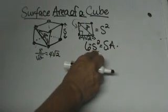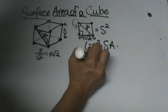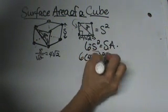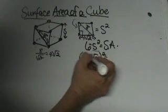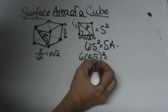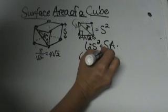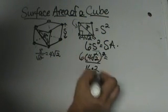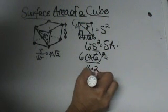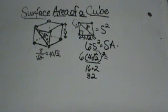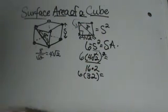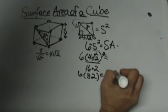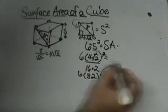Now we can take that and plug it into our formula. So we are going to take six times four square root of two, quantity squared, to find the surface area. Again, we have to square the four square root of two first. Four squared is 16, and the square root of two squared is just two. So the side squared is going to be 32, because 16 times two is 32. That gives us the area of one face. But we need to know the area of all six faces, so I am going to take six times 32 and I get 192 square units. And that would be my surface area.